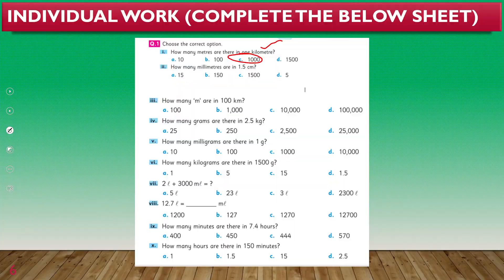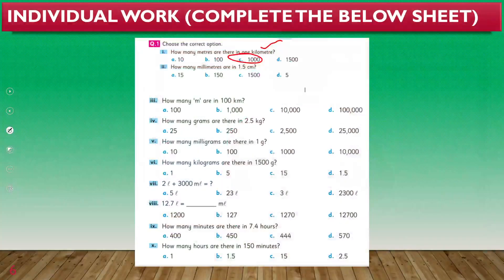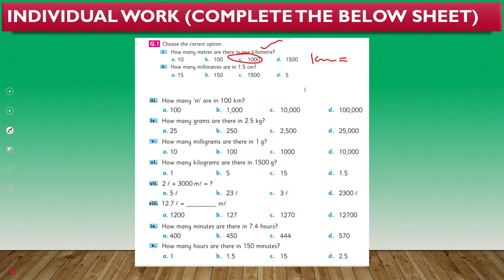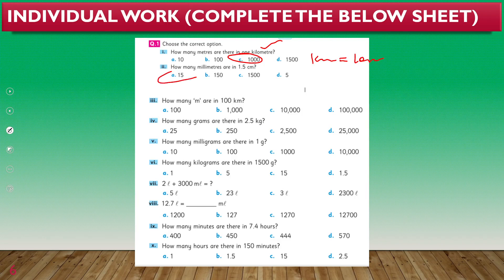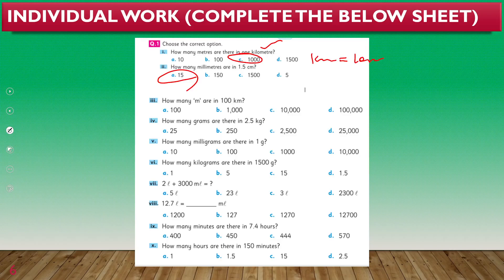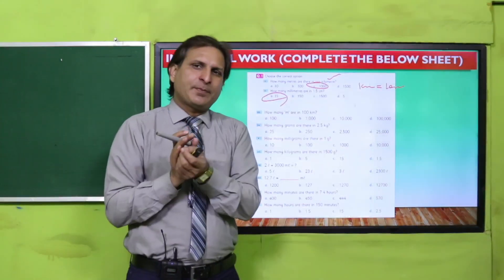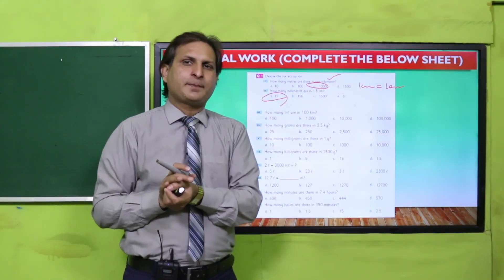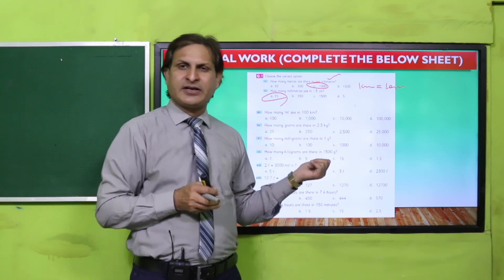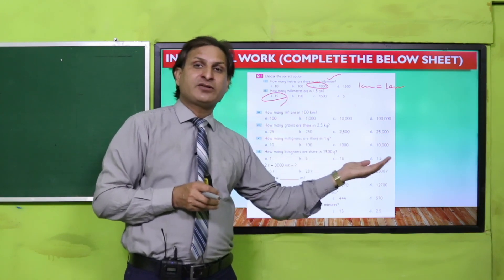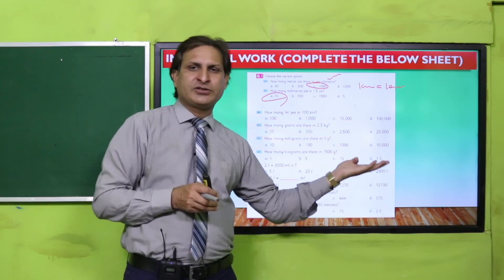You know that in 1 centimeter there are 10 millimeters. Multiply this by 10 and you will get your option. Similarly, you have to carefully read all the other parts, the question statements, and then the given options, four options, and choose the correct one.